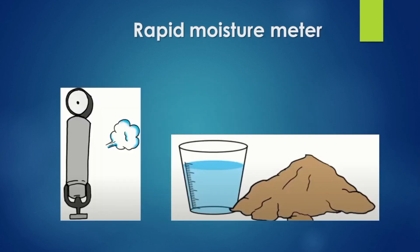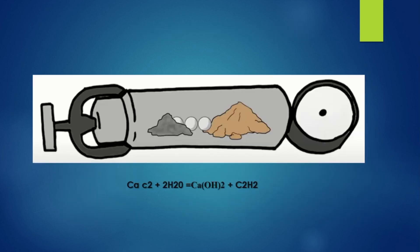Next, we use the moisture content method. One method is the oven drying method, which is the old method. Now we use the rapid moisture method, which gives a quick result. Water content is easy to determine from the soil sample. The rapid moisture method is called the calcium carbide method.